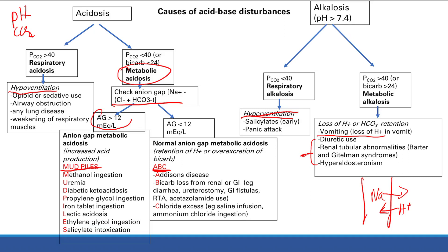This is an introductory overview of acid-base disturbances — it should be good enough for Step 1. But this stuff can get more complicated because you can get concomitant acid-base disturbances, like respiratory and metabolic at the same time, so your pHs can be weird. But at the level of Step 1, this is what you need to understand — and you need to understand it very well.